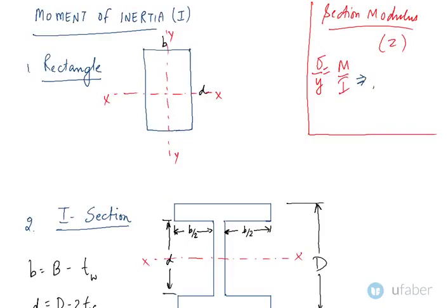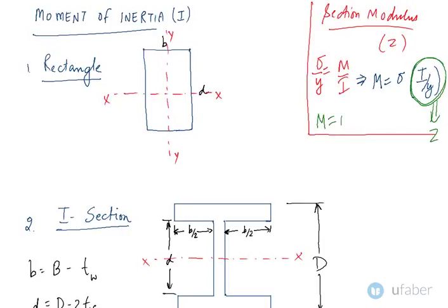That is the moment of inertia of the cross-section upon the distance of the section from the neutral axis. This term can be called the section modulus. So bending moment is nothing but the bending stress multiplied by the section modulus of the beam.